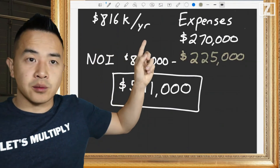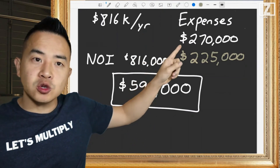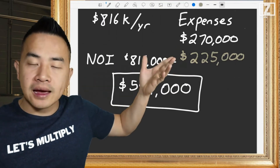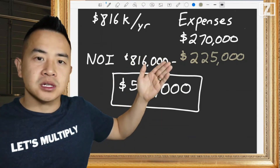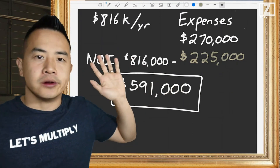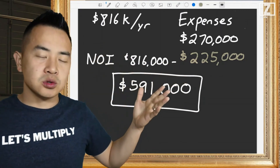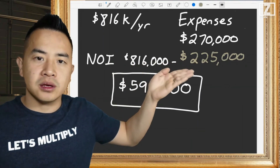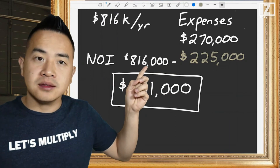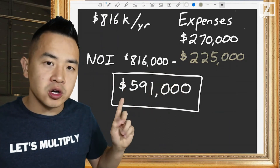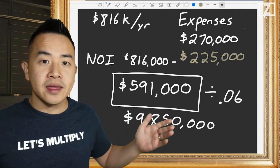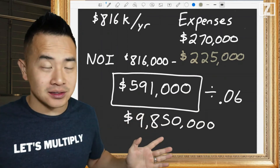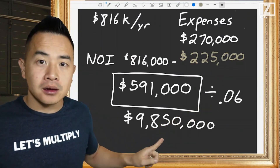Here's our $816,000 in gross income. On the expense side, the old owner was really inefficient — expensive property management, expensive contracts for snow and trash removal. We reduced water usage with low-flow toilets, installed high-efficiency light bulbs, and cut expenses down from $270,000 to $225,000 per year. Subtract the $225,000 from $816,000 to get our new NOI. Divide by the 6% cap rate and we have a new value: $9,850,000.